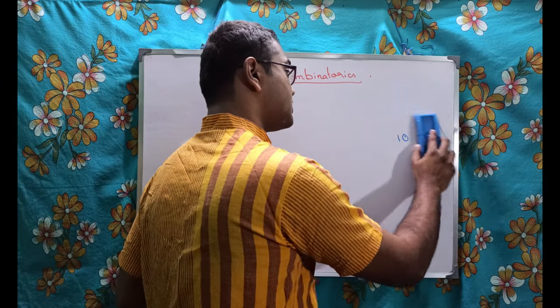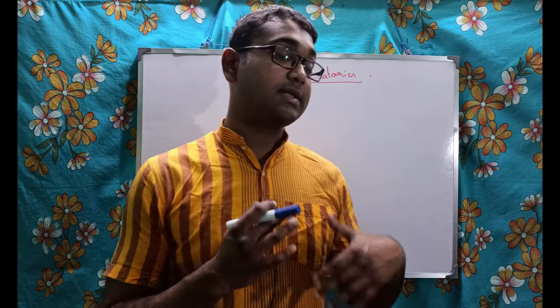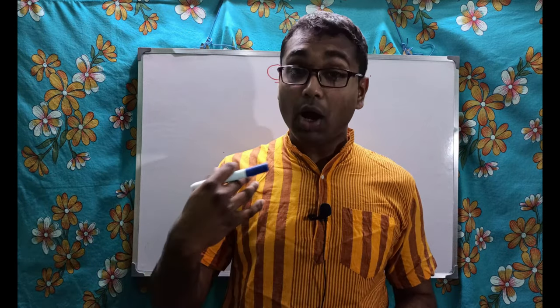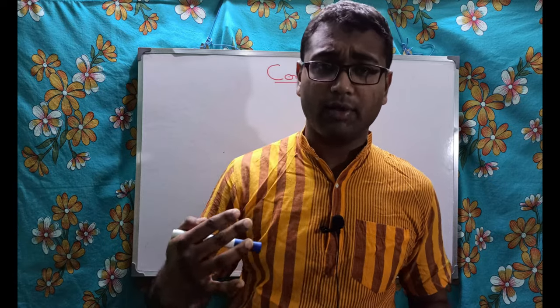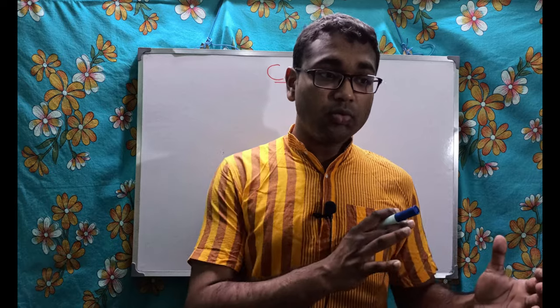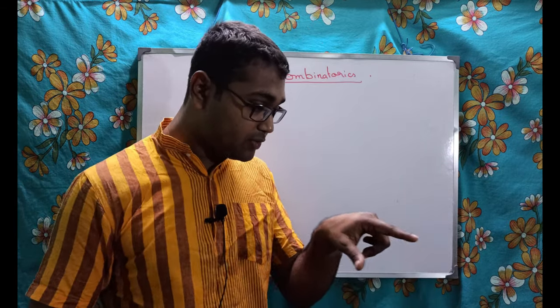Before going to permutations and combinations, let me start with the principles of counting — how we should count. Someone might say we already know counting like 1, 2, 3, but this counting is a little bit higher level. It is more discrete in a different sense than simply counting five chocolates as 1, 2, 3, 4, 5.